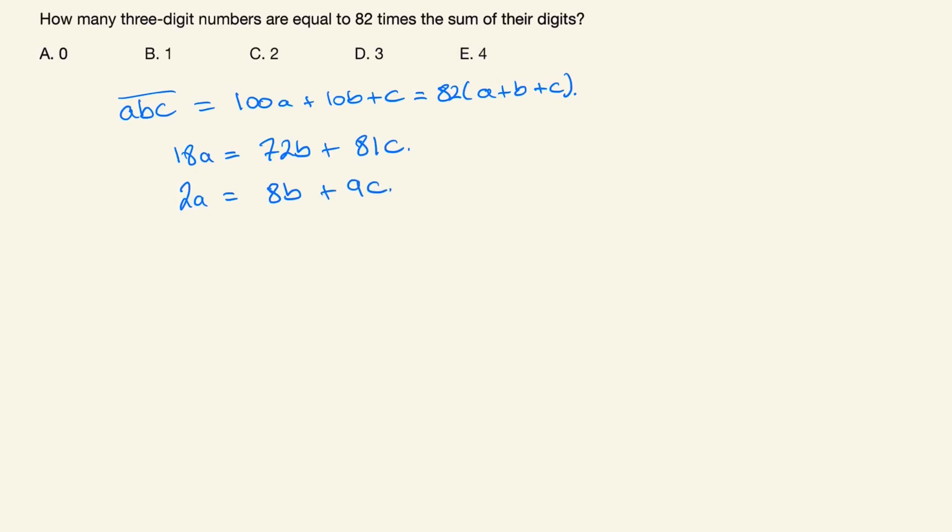Since 2A and 8B are both even, then we must have 9C is also even, or in other words C must be even. So C is an even number, and since it's a digit it can either be 0, 2, 4, 6 or 8.